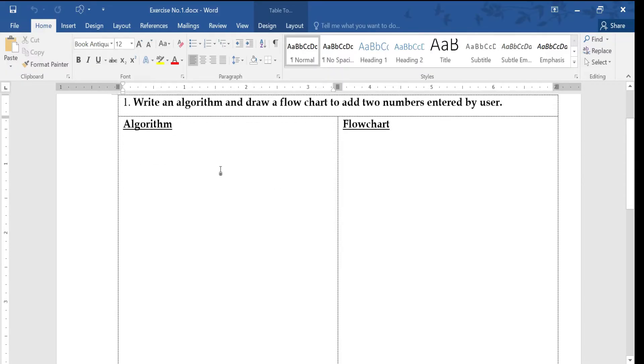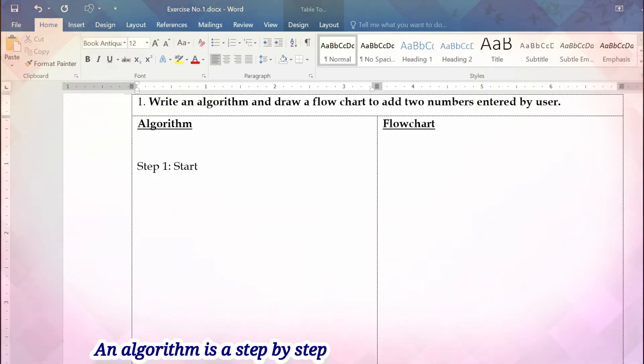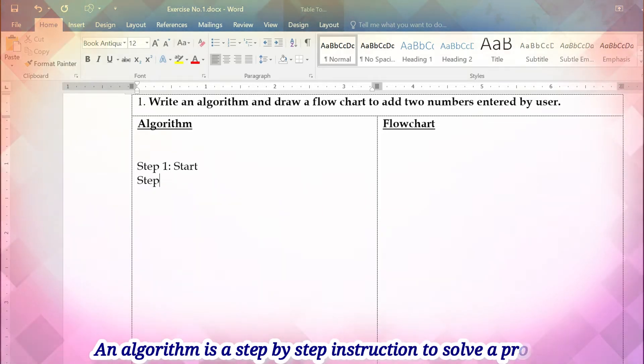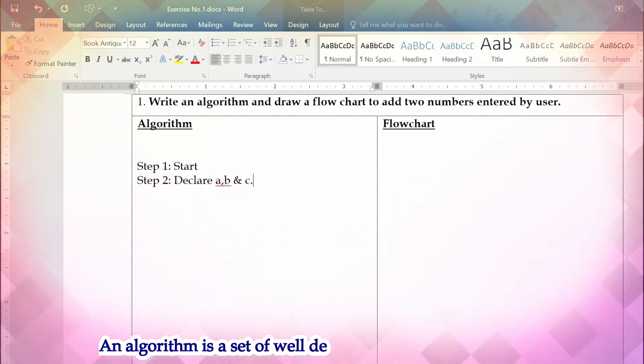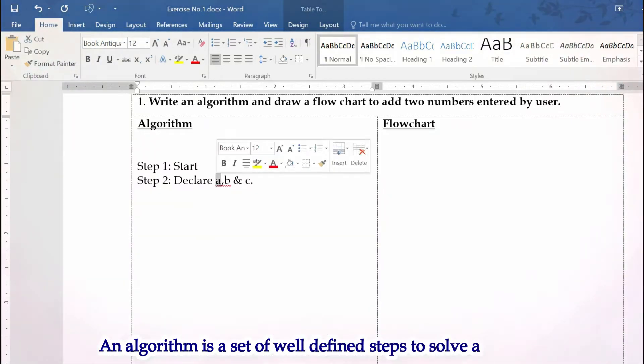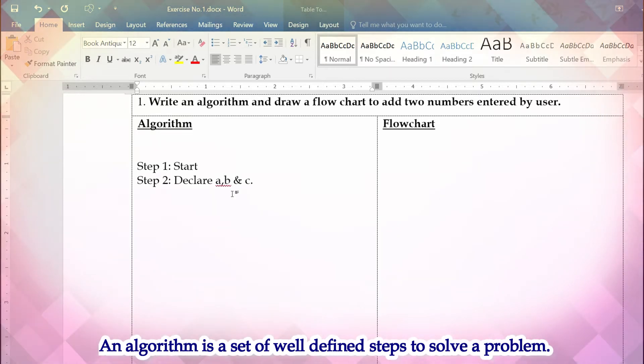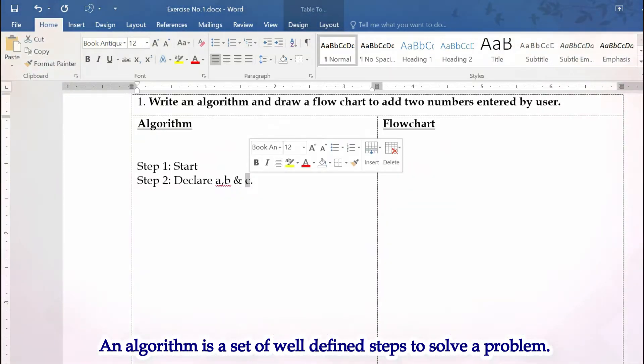We'll start writing the algorithm. Step one will be start, and step two, we are in need of two variables in order to get the value and another variable to store the result. Let us declare a, b, and c. We'll get the first value and store it in a, the second value in b, and the summation of a plus b will be stored in c.